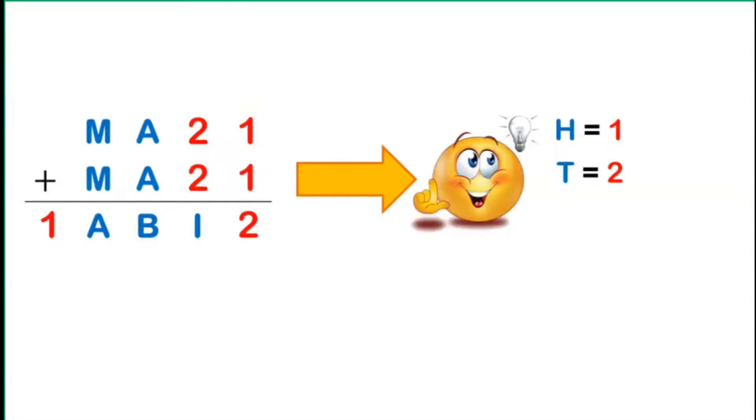This time, for the 10th place, we have 2 plus 2, which is obviously equal to 4. It means that the letter I is equal to the digit 4. Okay, we are almost done.